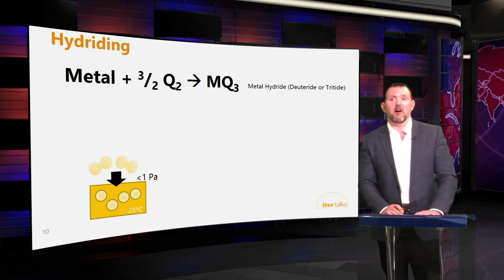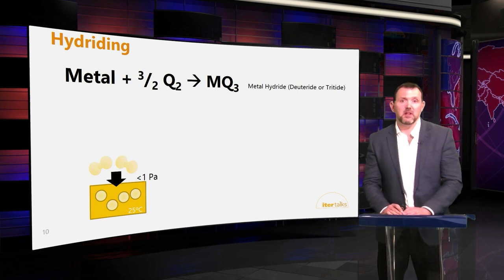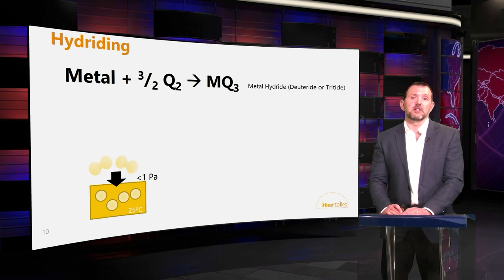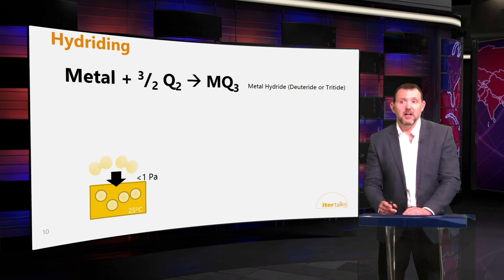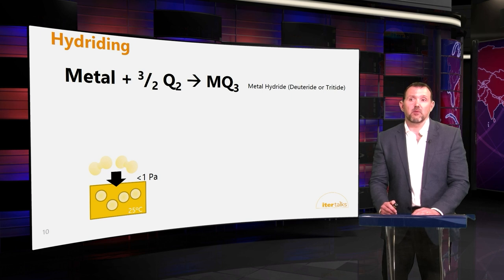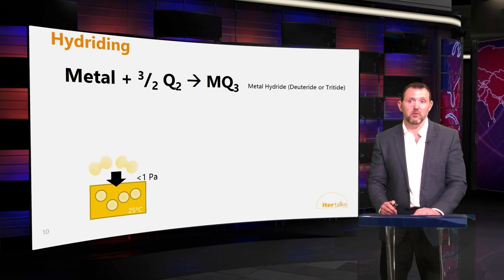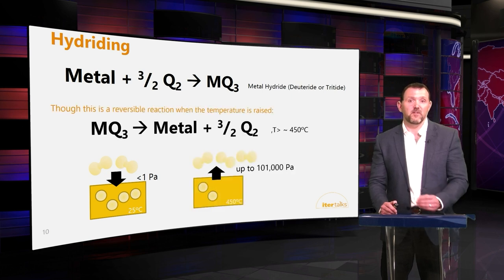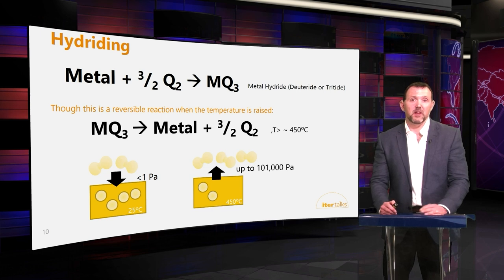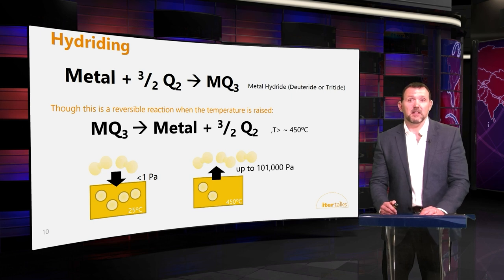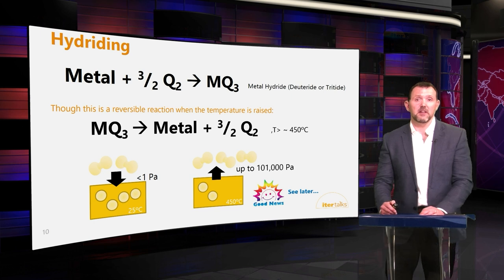The next topic is hydrides. Certain metals — typically in group five — can form a hydride where the metal sucks up the hydrogen and reduces the pressure above it to a very low level. The good thing is this is a fully reversible process: if we want to get the hydrogen back out of the metal, we simply heat it up. This is a very useful property for our storage and delivery system, as we'll find out later.